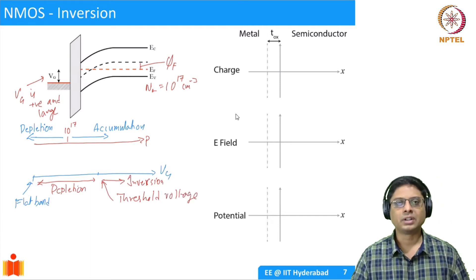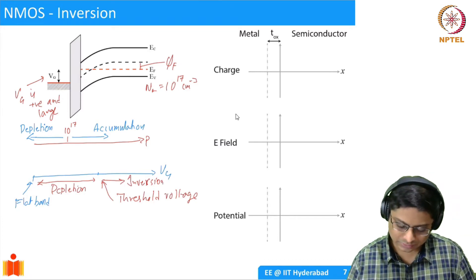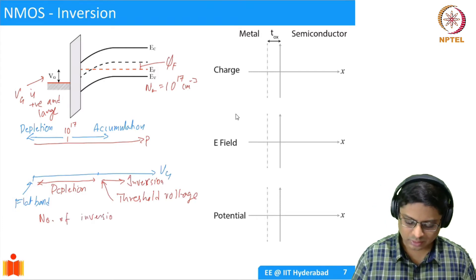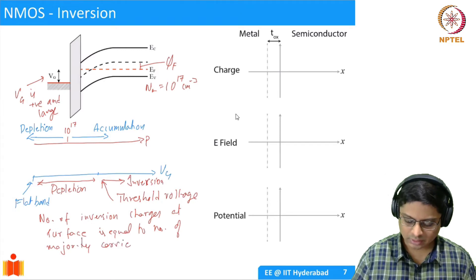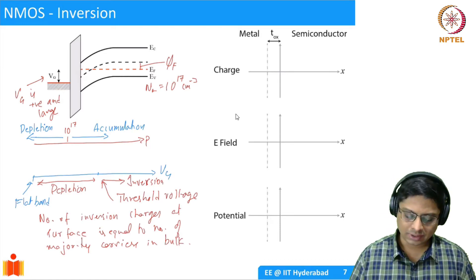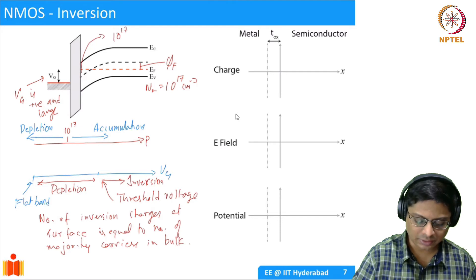To analyze the threshold voltage, we first look at the surface potential. The way we define threshold is: in the case of an NMOS device, the number of inversion charges at the surface is equal to the number of majority carriers in the bulk. So if 10^17 is the number of holes in the bulk, we need to have 10^17 electrons at the interface.